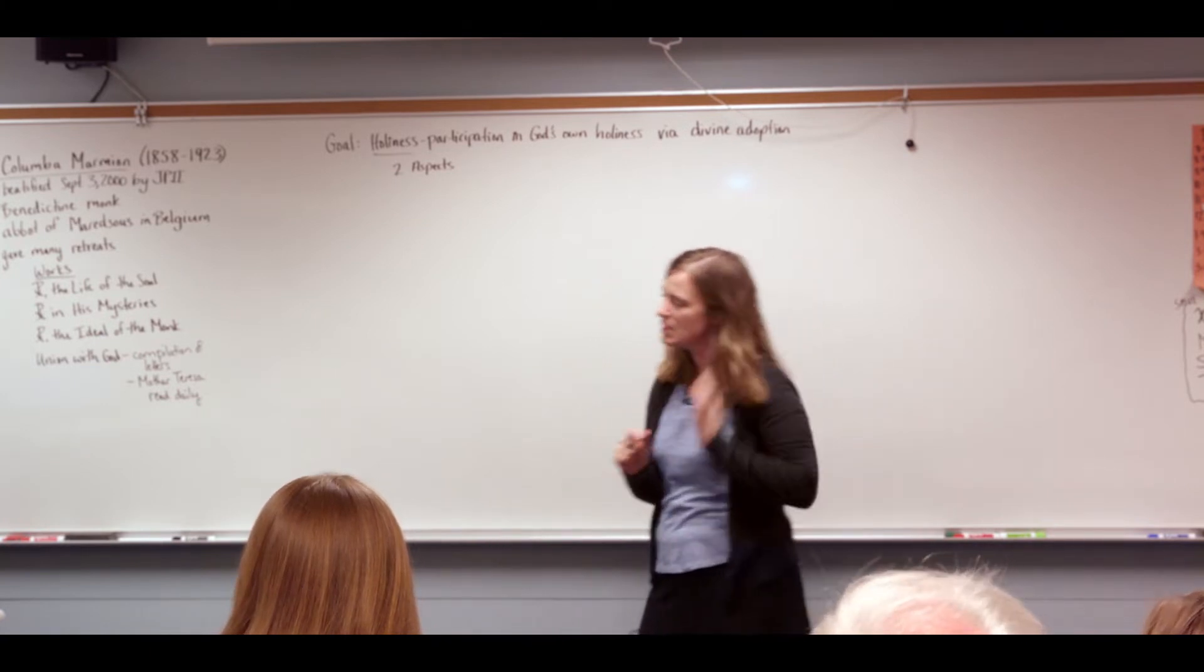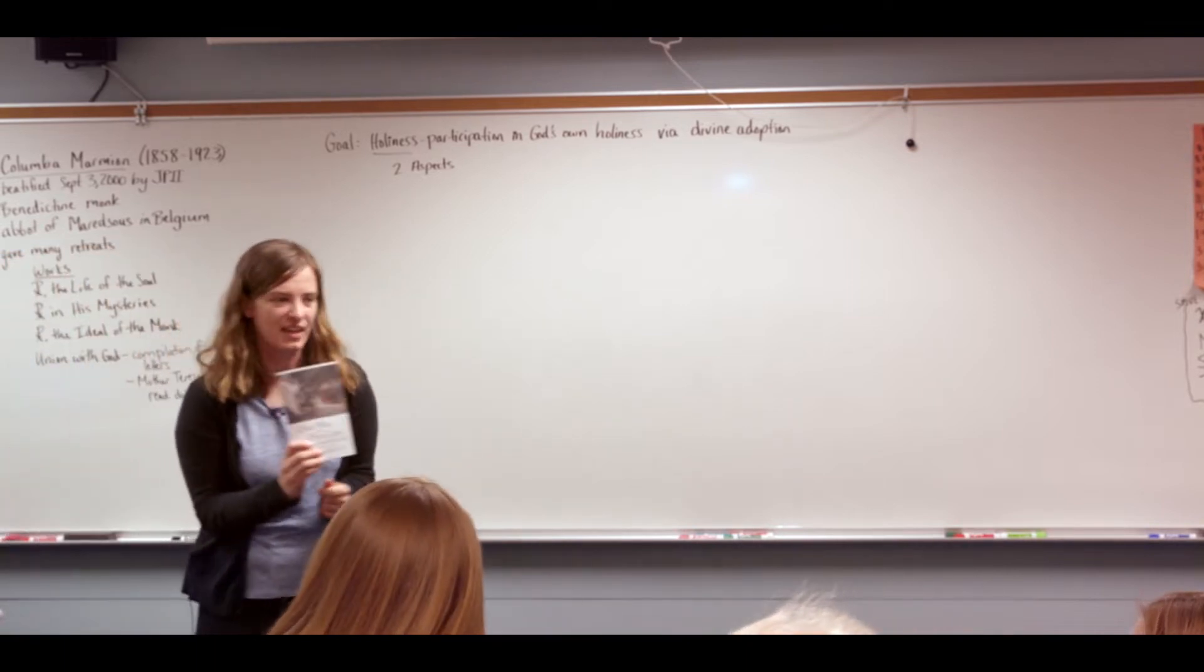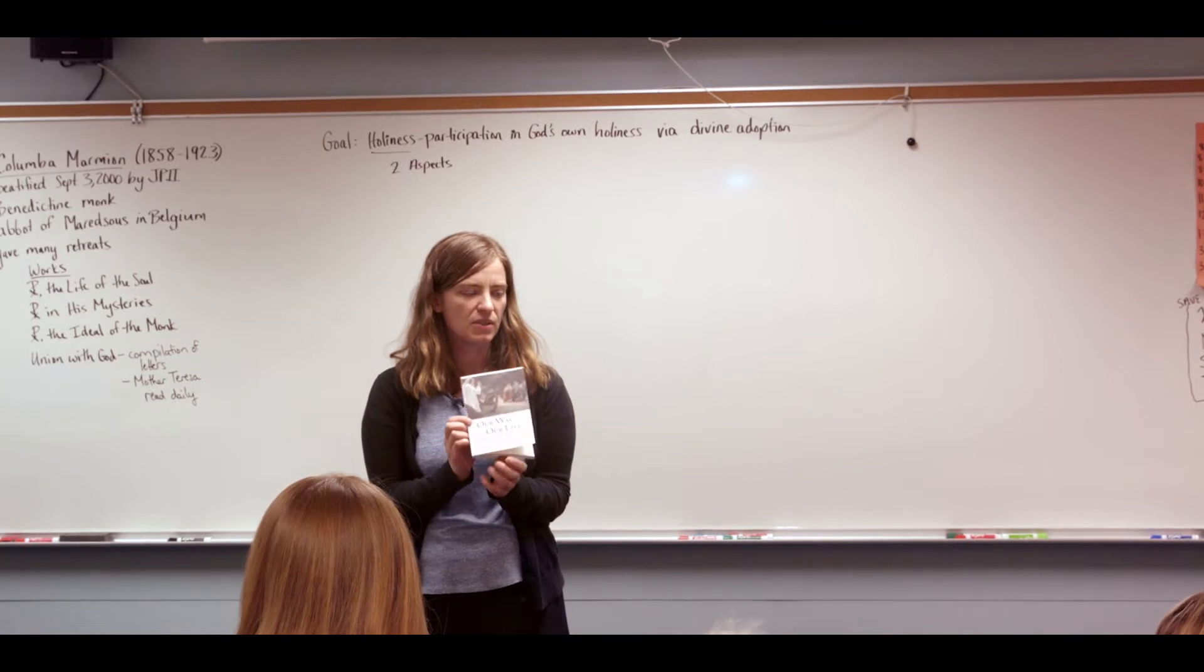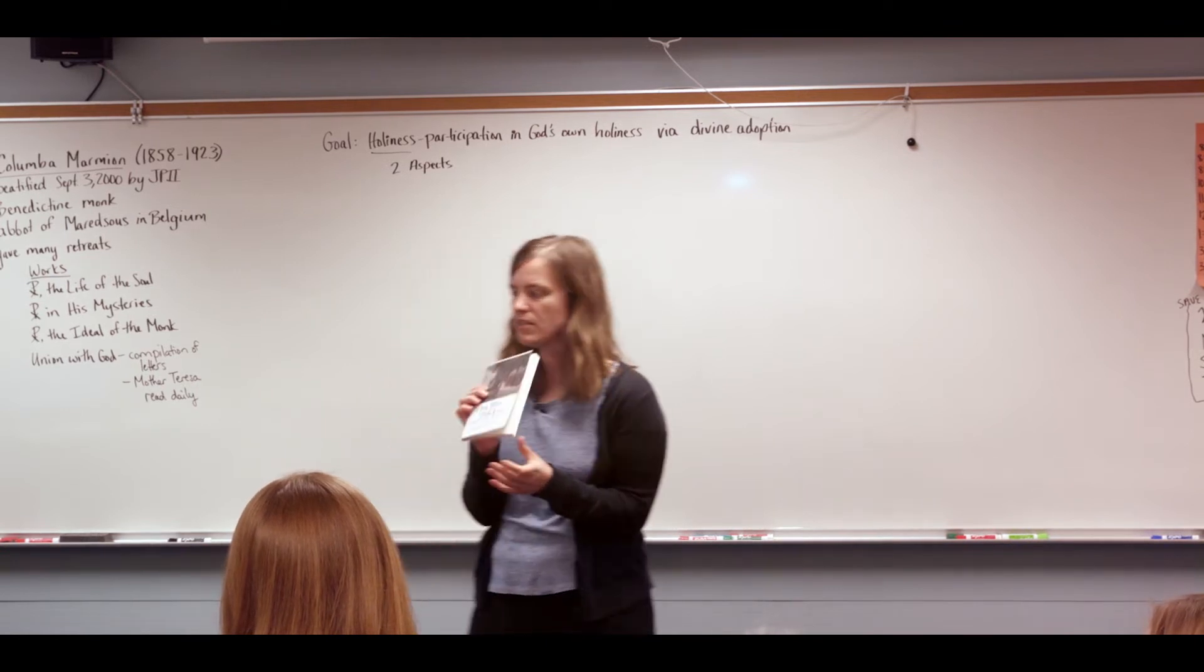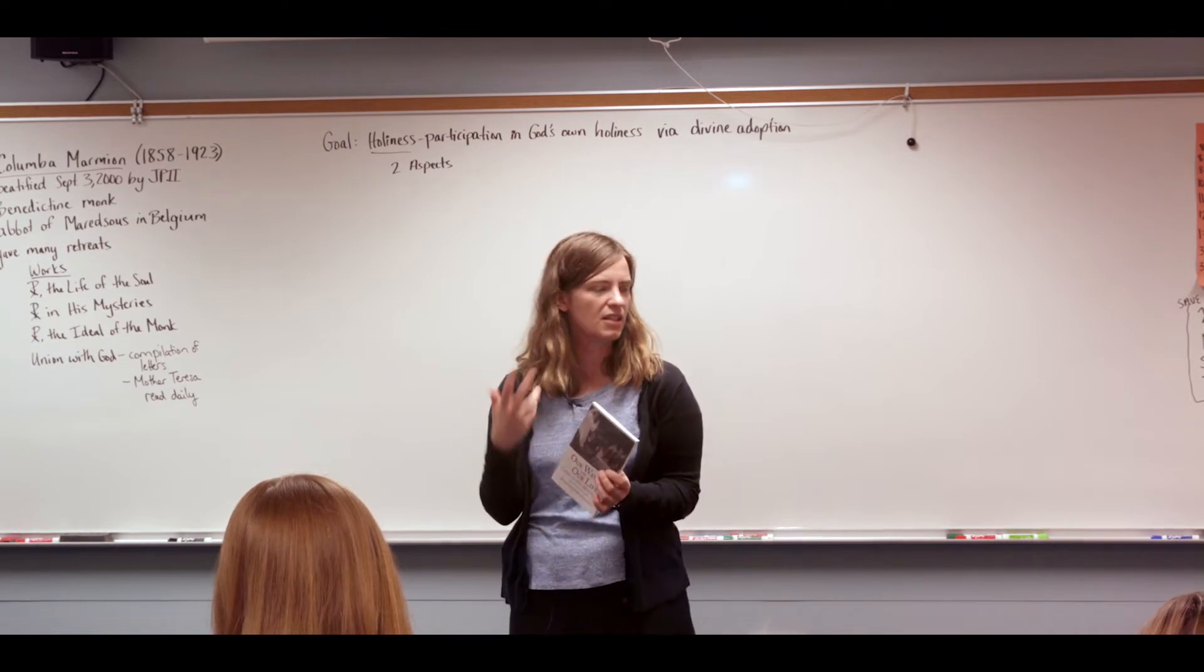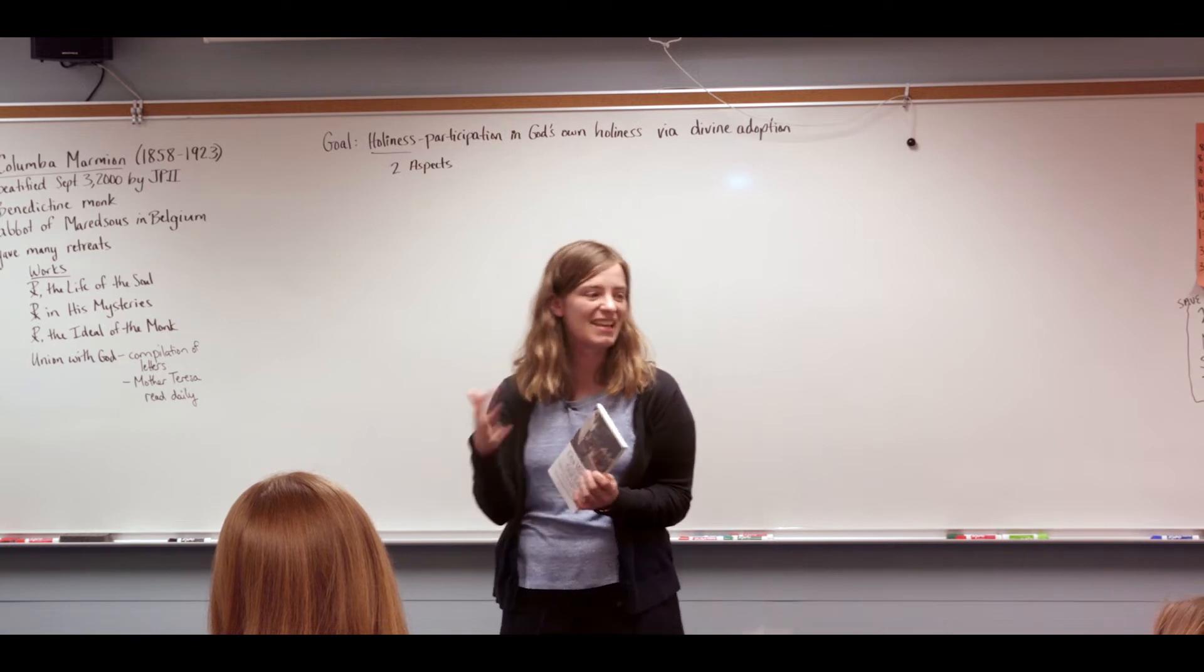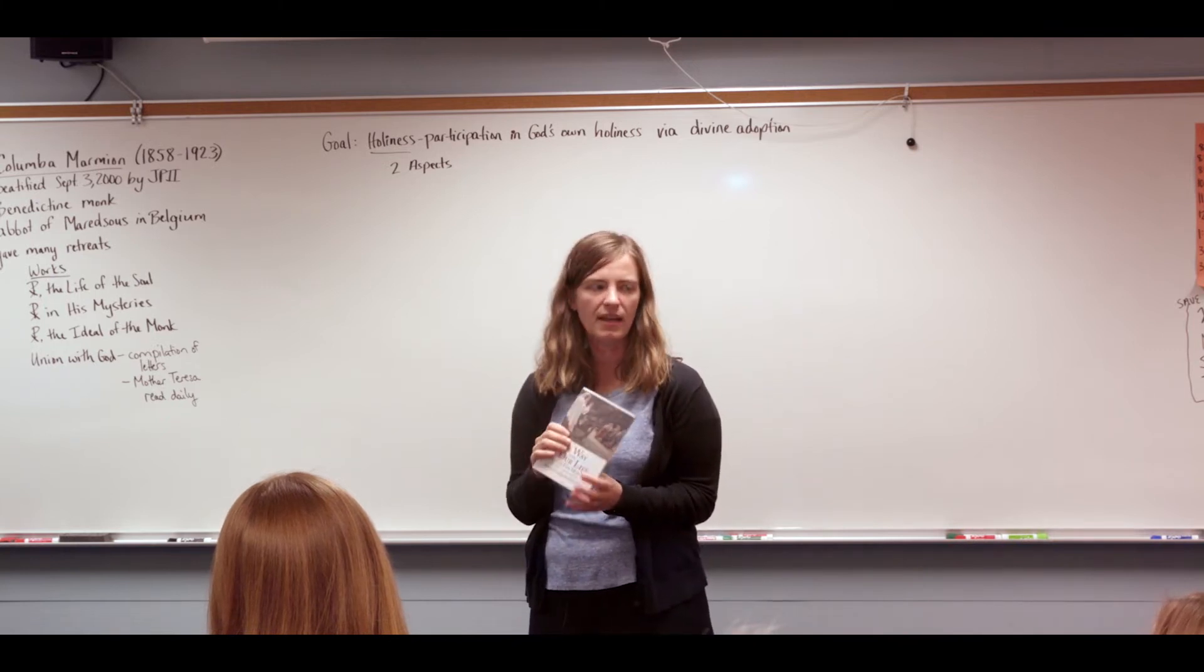So we're going to be looking at this book that some of you have. Well, all of you have a copy of it, at least, and some of you have the real thing. It's called Our Way in Our Life, Christ and His Mysteries. And it's by Blessed Columba Marmion. So he was an abbot of Maritsu, which was a Benedictine monastery in Belgium. And so he was a really good spiritual writer, and he gave a lot of talks. So he would go around giving retreats and talks to people all over. And so a lot of people wrote them down shorthand, and then they were made into books. So this book is a kind of compilation of some talks that he had given at a retreat.